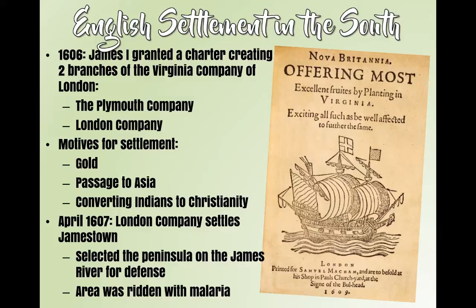We already know we got the Virginia Company. They're going to send out — there's two parts of it — the Plymouth Company and the London Company, and they're going to establish two big settlements in the New World. Why did we come to America? Looking for gold, of course. Also, they were originally looking for a passage to Asia, those first European explorers. And it says converting Indians to Christianity — not just Indians, it was really converting anybody they could get a hold of.